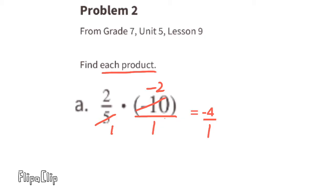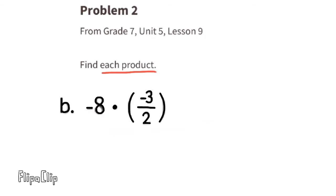That leaves us with negative 4 over 1, which is the same as negative 4. Part b: negative 8 times negative 3 over 2. We can rewrite that as negative 8 over 1 times negative 3 over 2, and we can simplify. 2 goes into 2 once and 2 goes into negative 8 four times, so that becomes negative 4. Now multiply straight across: a negative times a negative equals a positive, and 4 times 3 equals 12.